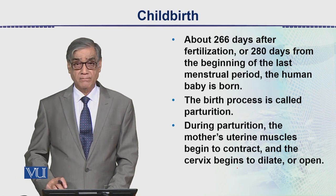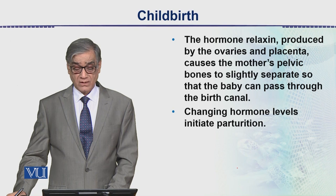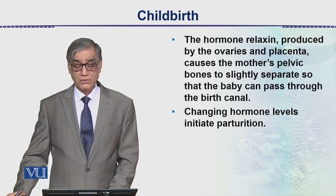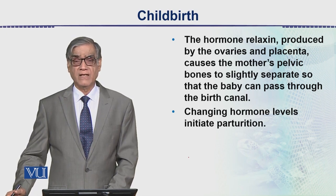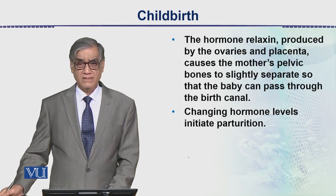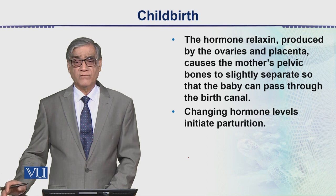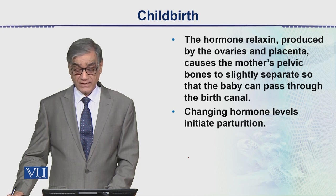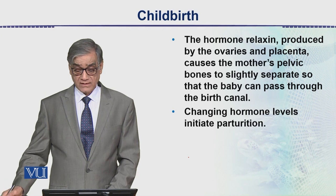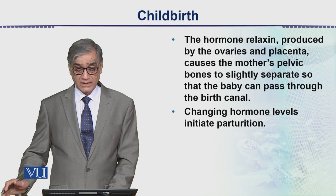The hormone called relaxin, produced by the ovaries and placenta, causes the mother's pelvic bones to slightly separate so that the baby can pass through the birth canal.